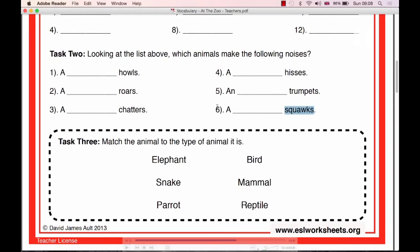So howls, it sounds the same way we write it, so you can guess what animal that is. That's a howl. Number 2, roars. It's also very similar. It's going to sound like roar, roar, roar.